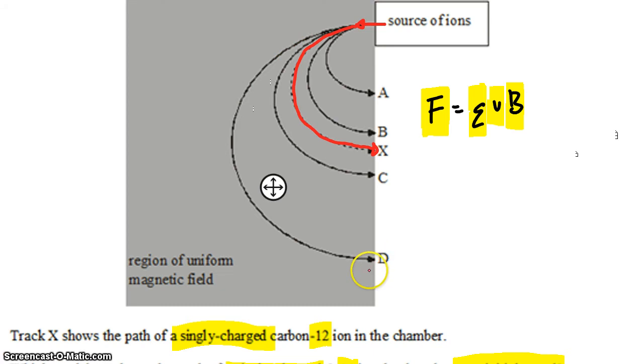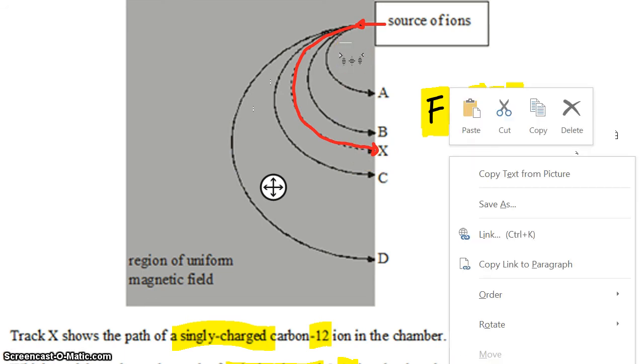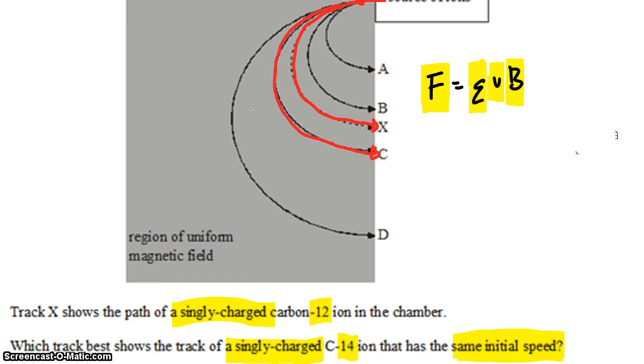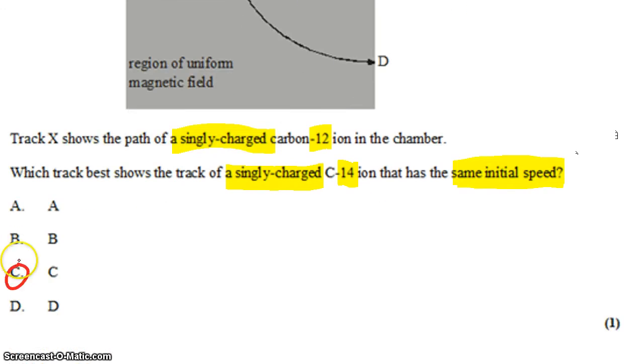Well, path D is twice the radius of path X. So you might expect that to result from a particle that's twice as massive. Carbon-14 is not even close to twice as massive. It's only a little bit more massive. So the result is going to be just a slight change to the path of the particle. And that would make C the best answer. Here we go.